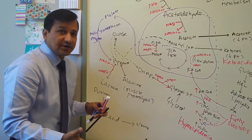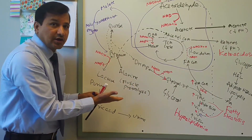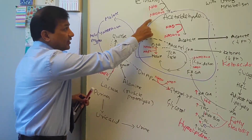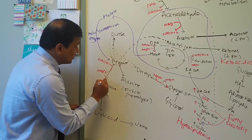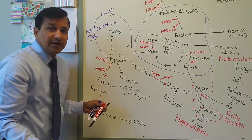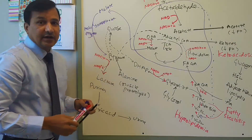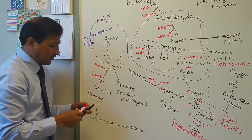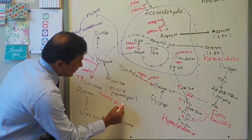Under fasting and starvation conditions, skeletal muscle proteolysis releases alanine, which is taken into the liver and transaminated to pyruvate. Pyruvate should enter gluconeogenesis, but because there is plenty of NADH+H+ in the cytoplasm, pyruvate is instead diverted toward lactate formation. Lactate dehydrogenase converts pyruvate to lactate using NADH+H+ and regenerating NAD+. So lactate builds up, giving rise to lactic acidosis.